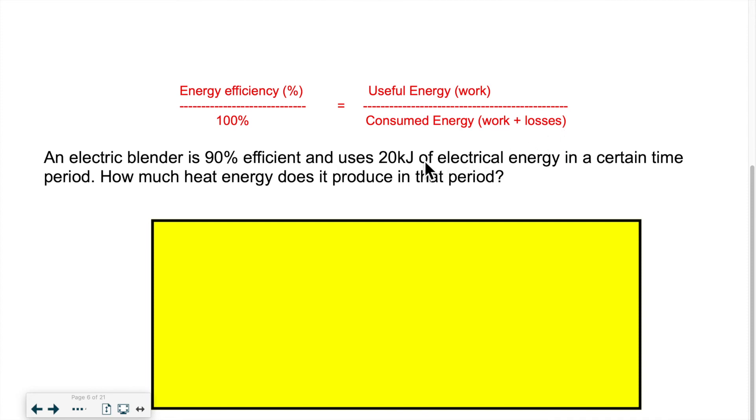The other question you need to ask yourself, it uses 20 kilojoules of energy in a certain amount of time. Is this the total amount of energy or is this the energy that did the work? The way it's worded, one could interpret it as it's the total amount of energy. So they're asking you out of the 20, so the 20 would go over here, if it's 90% efficient, well then how much energy was kind of lost to the environment? So this requires a little bit more math, a little bit of algebra. So let's take a look.